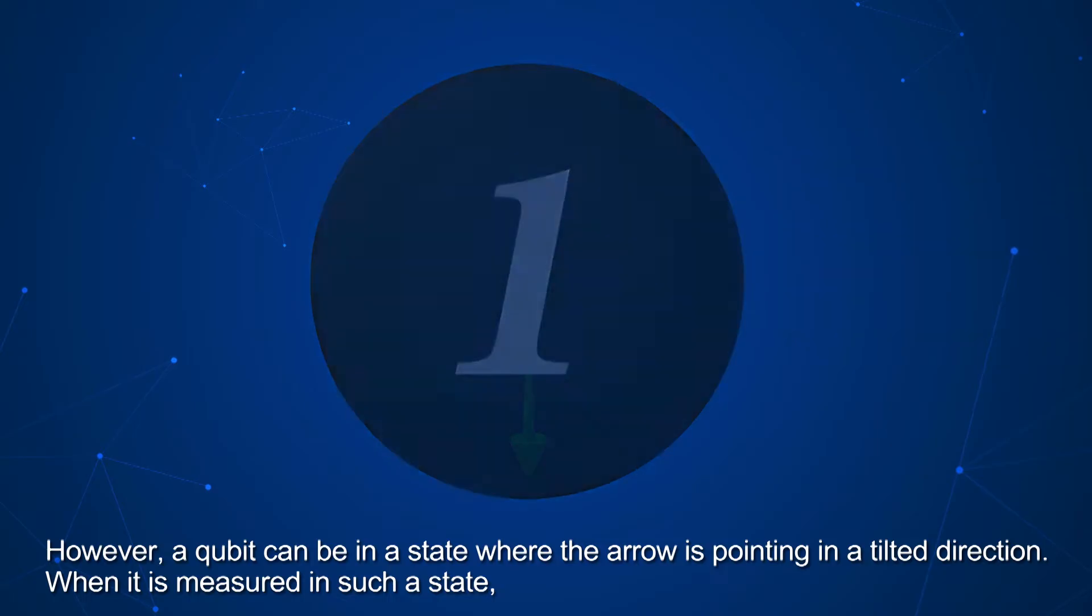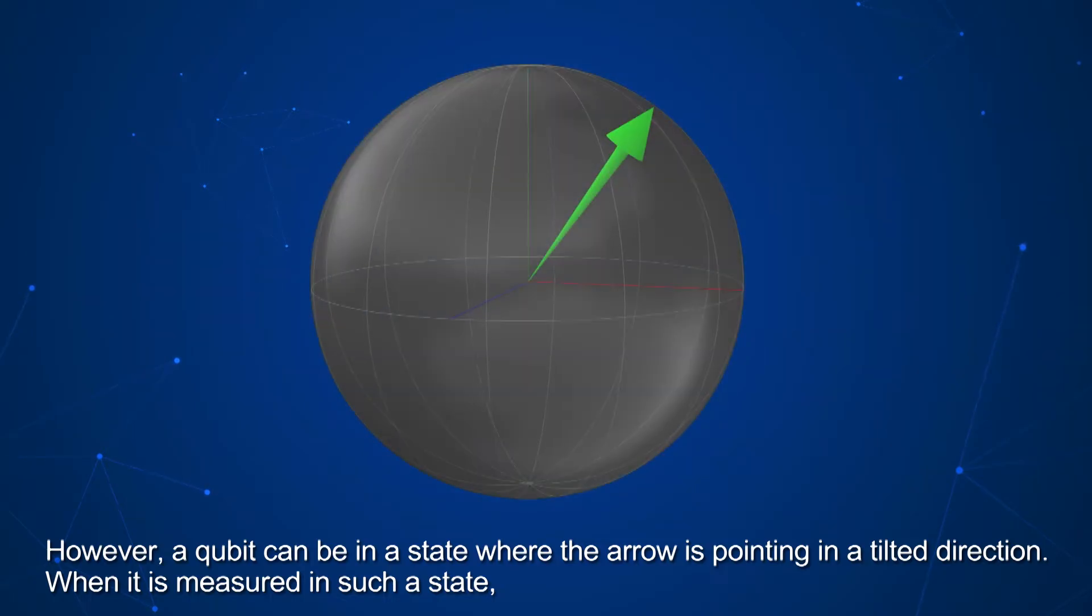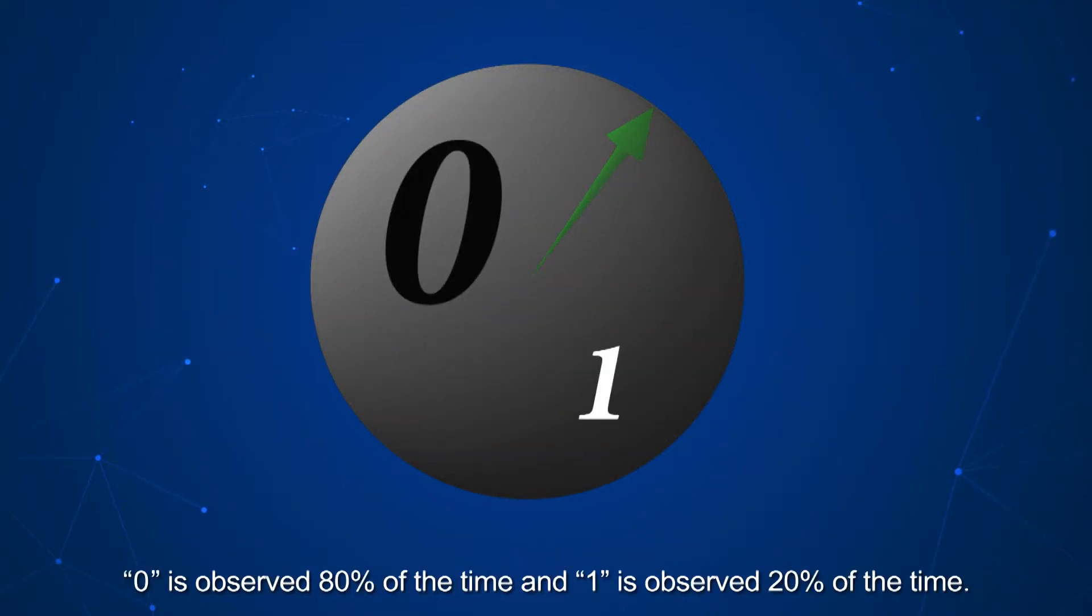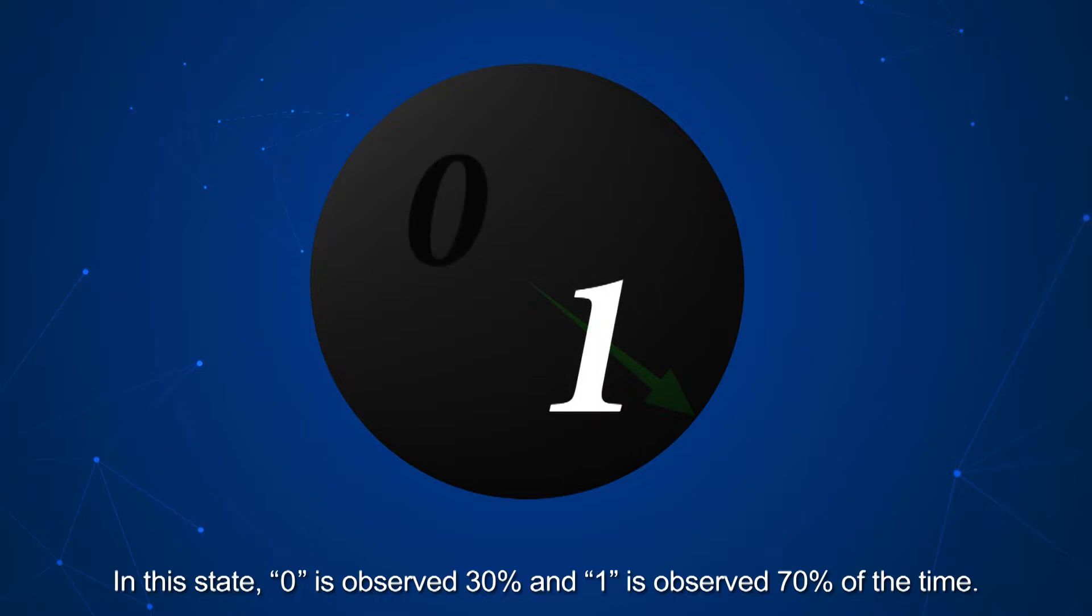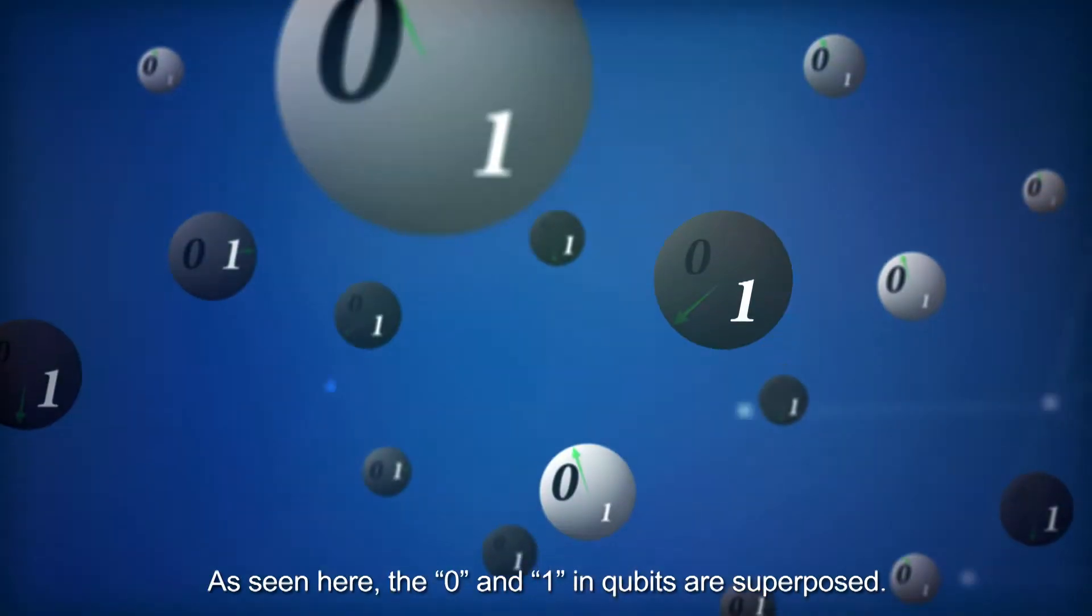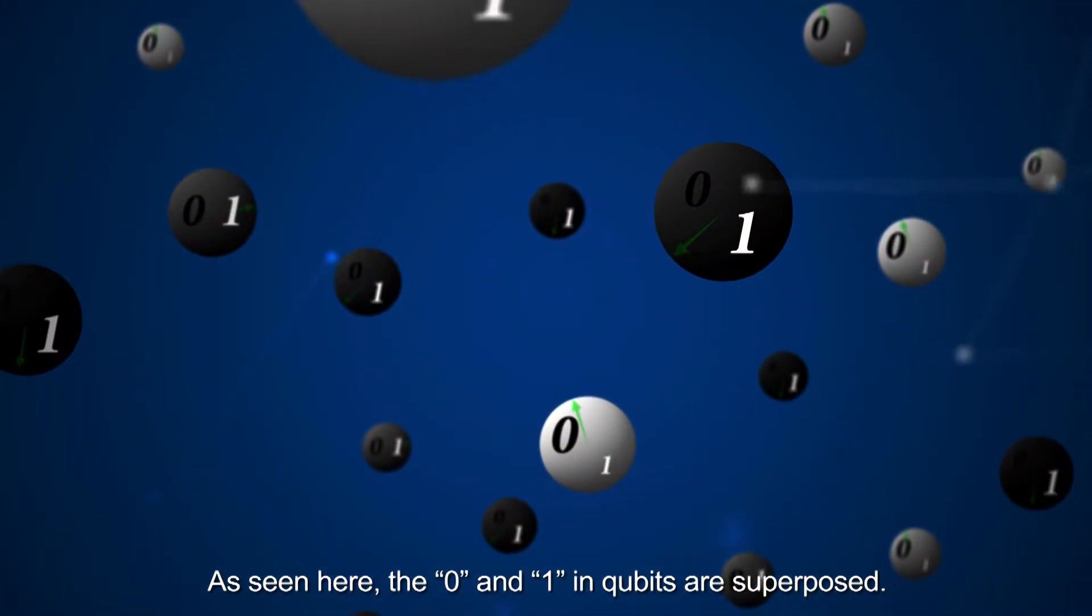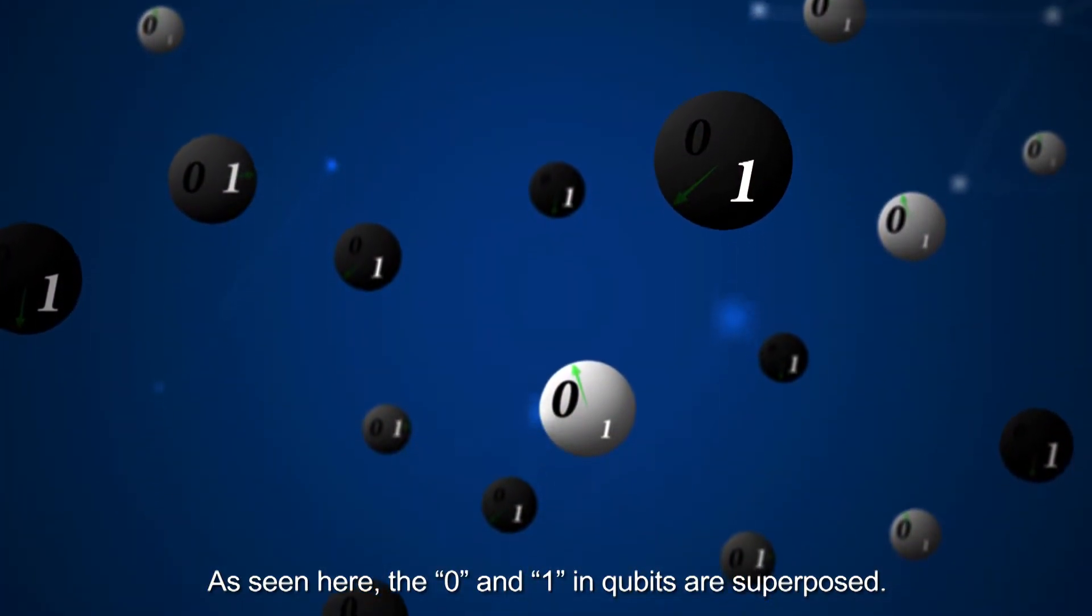However, a qubit can be in a state where the arrow is pointing in a tilted direction. When it is measured in such a state, 0 is observed 80% of the time and 1 is observed 20% of the time. In this state, 0 is observed 30%, and 1 is observed 70% of the time. As seen here, the 0 and 1 in qubits are superposed.